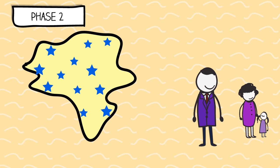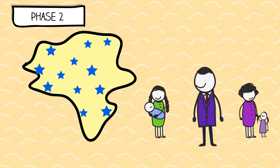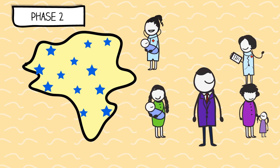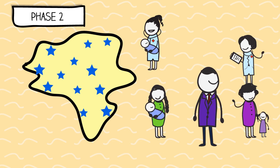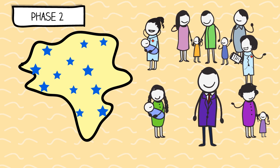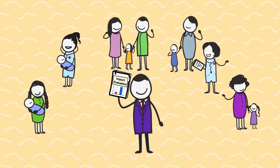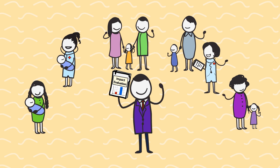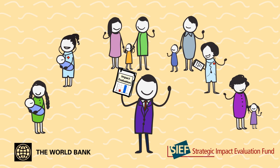So when your program can't reach everyone, or can't reach everyone at the same time, randomization is a fair, transparent way of selecting who receives it, or who receives it first. Plus, it means you've designed a rigorous evaluation to test if your program is really having an impact.